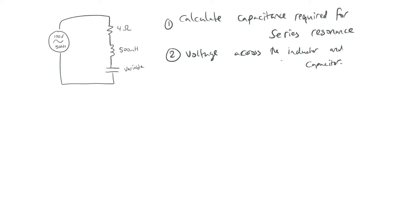Whenever you're dealing with resonance problems, just think about it like this: at resonance, XL is going to be equal to XC. And we can calculate resonant frequency using fr = 1 over 2π times the square root of LC. As long as you keep those things in mind, you should be fine.